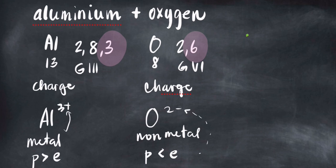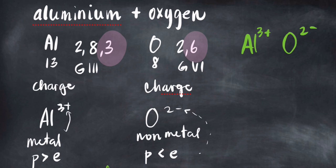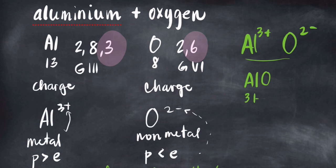Now that we know the charges — aluminum 3+ and oxygen 2− — let's figure out how many aluminum and oxygen atoms we need for this compound. Remember, all compounds should have an overall charge of zero. If we only have one aluminum and one oxygen, the charge would be 3+ and 2−, giving a total overall charge of 5+. That cannot be, because it needs to be zero.